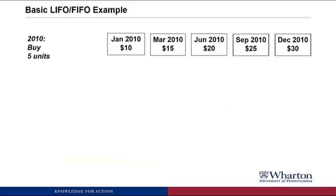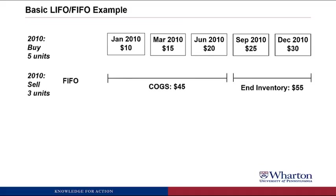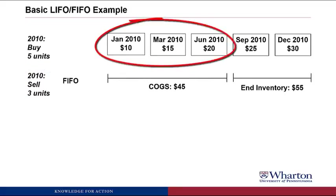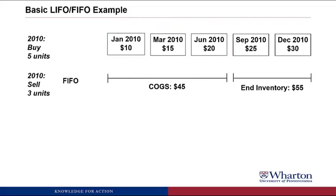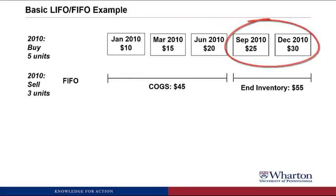Let's throw some numbers at this. In our example, we're going to go back to 2010 and buy five units of inventory. We buy them in five separate months, and the prices are increasing as we go through the year. We sold three of the five units. Under FIFO, we take the first three units purchased — the $10, $15, and $20 costs — and that is our Cost of Goods Sold. The two newest costs, $25 and $30, would be in ending inventory. So we'd have COGS of $45 and ending inventory of $55.